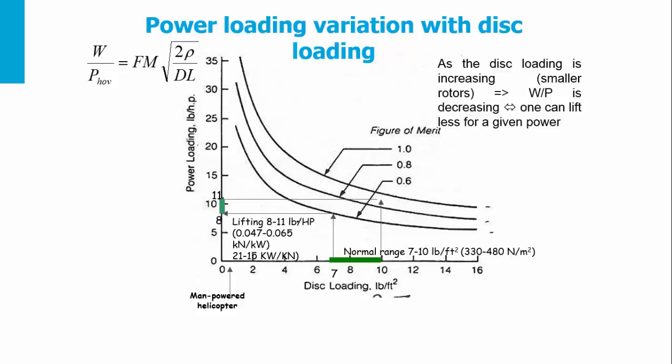There are different graphs in this figure according to the figure of merit considered: 0.6, 0.8, or 1. High disk loading affects not only the downwash velocity but also the power required to hover. The normal range of disk loading is between 7 and 10 pounds per square foot, resulting in lifting between 8 to 11 pounds per horsepower.